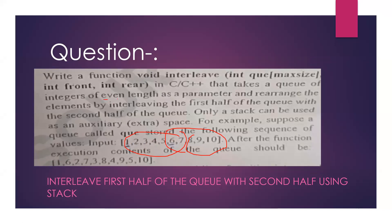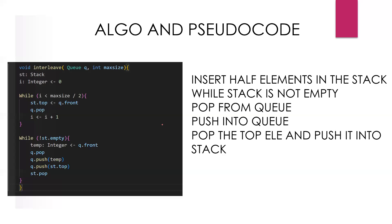A few things to keep in mind: the queue will be of even length, and in our algorithm we can only use a stack as our auxiliary space, that is extra space. I would encourage you to pause the video and try it out yourself. Now let's see the solution — here is the algorithm and the pseudocode.